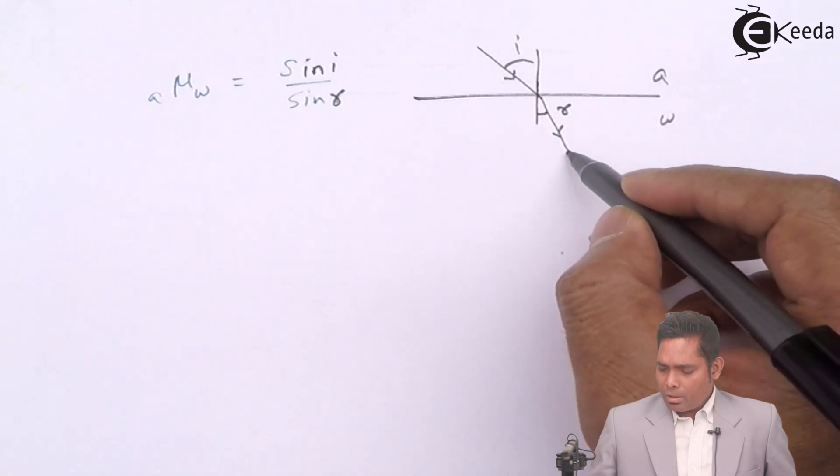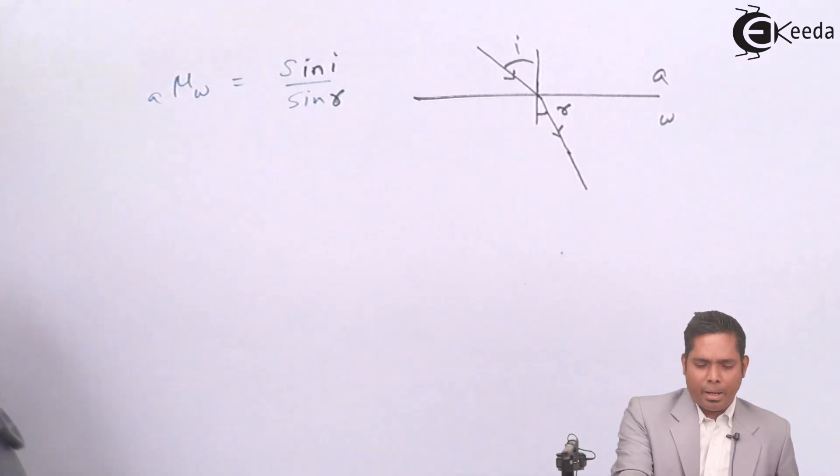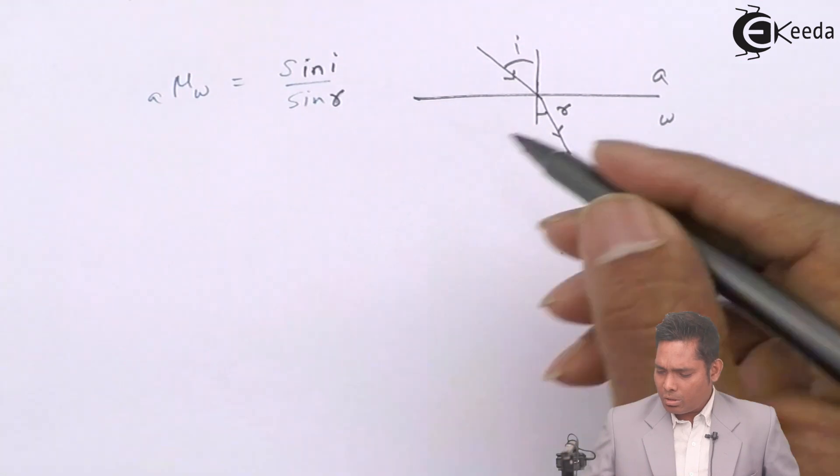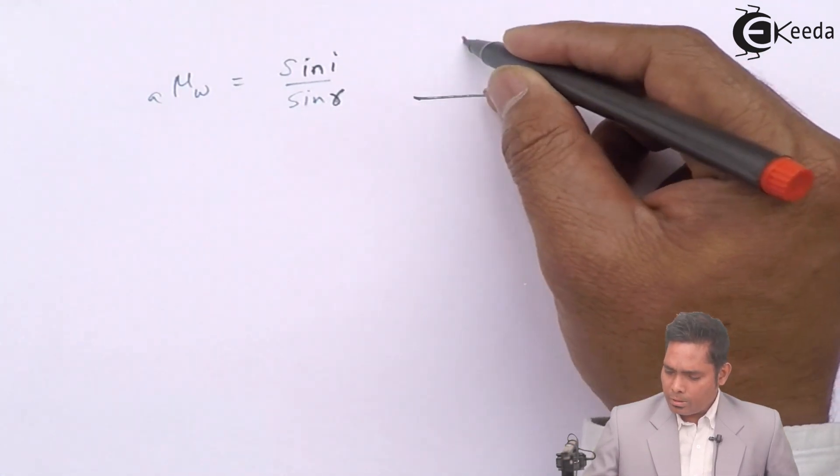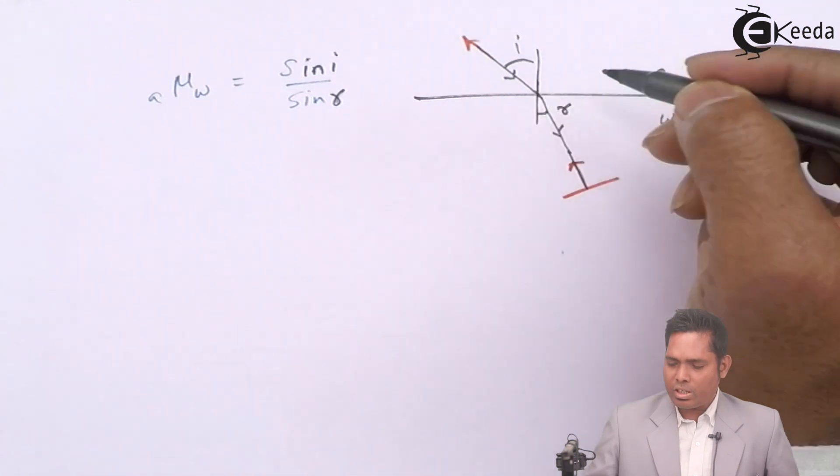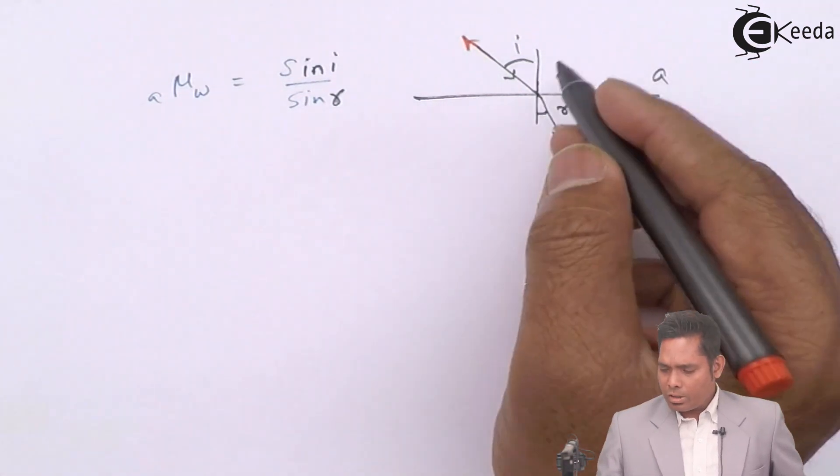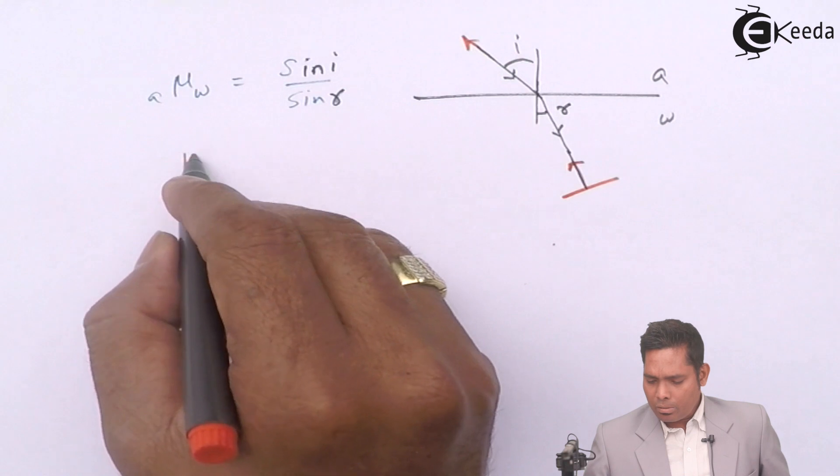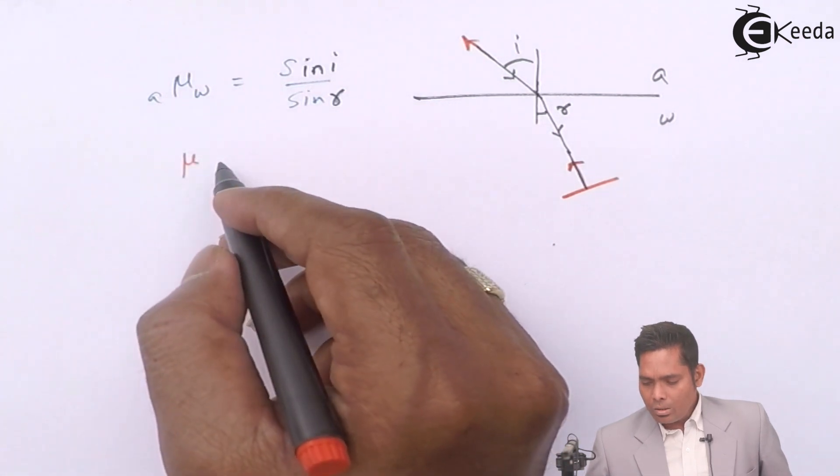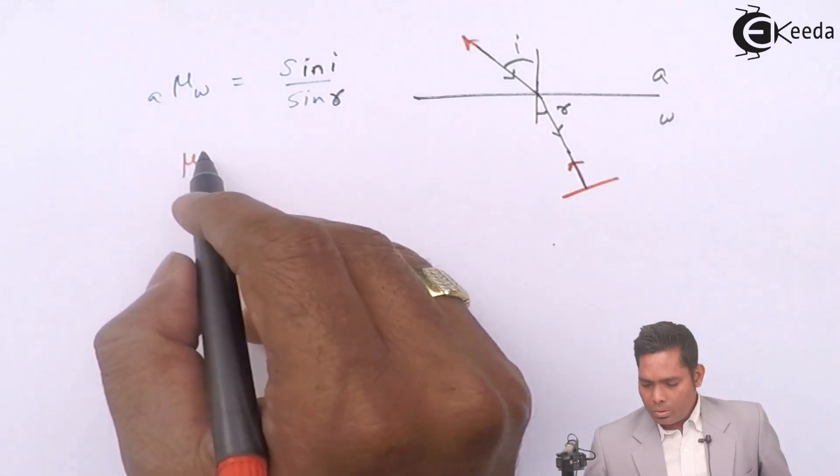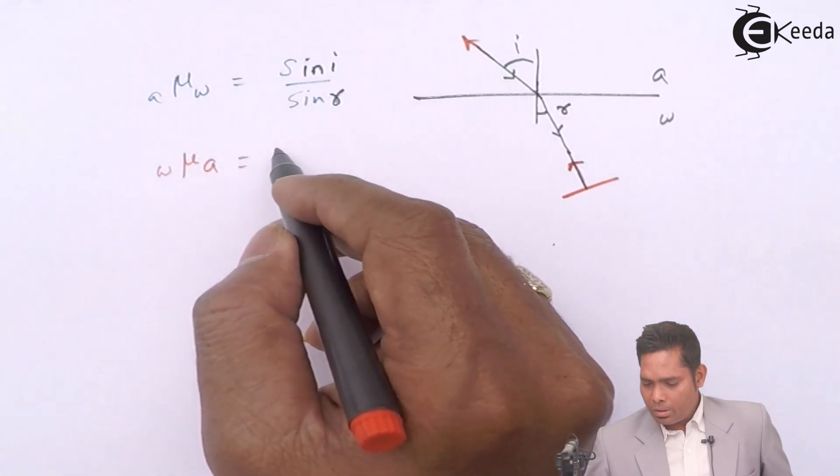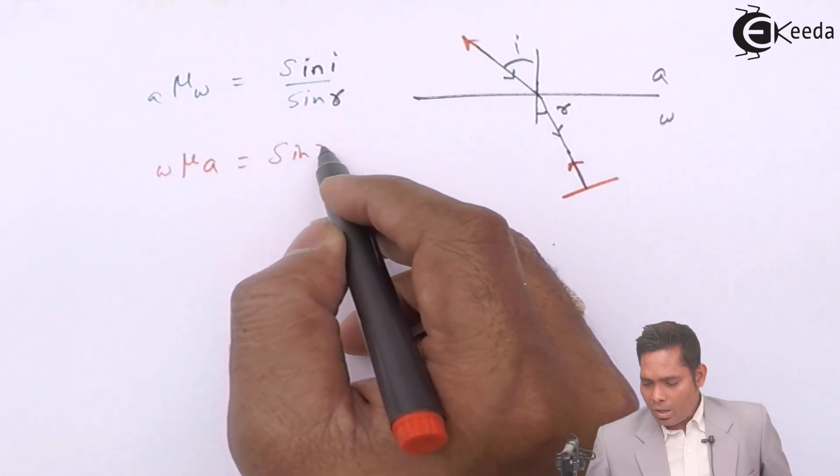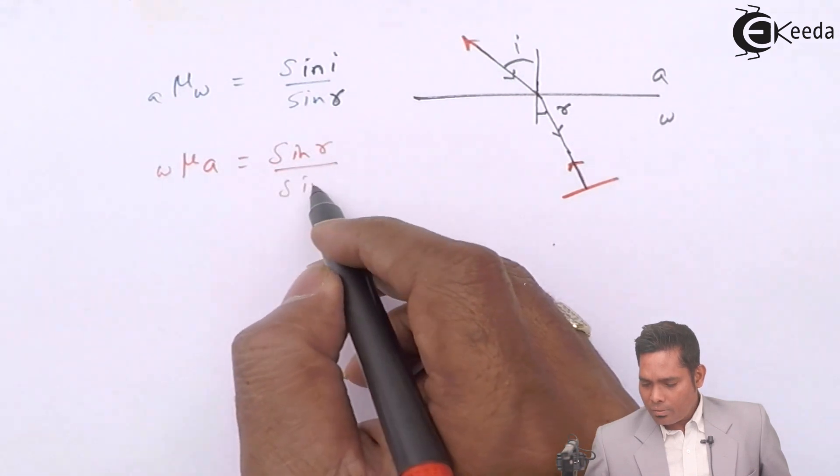That means if I send it back in the opposite direction from here, then this is going to follow this path. This again retraces this path. So for this, if I write the equation for mu of air with respect to water, this will be sine r by sine i.